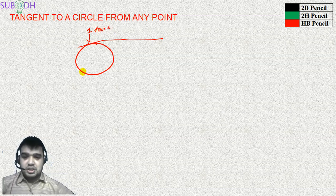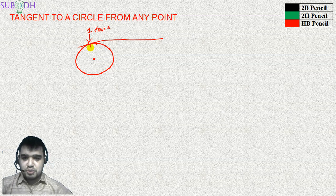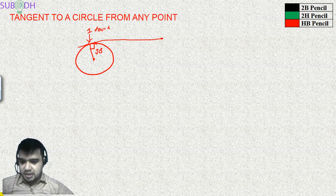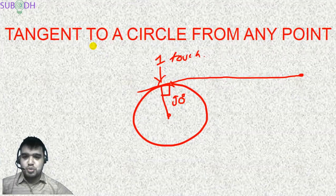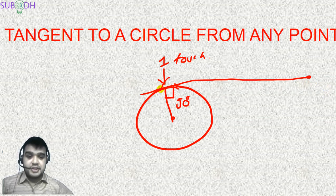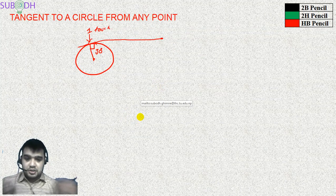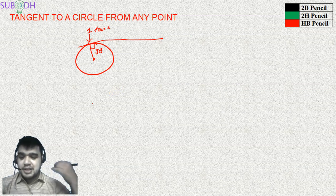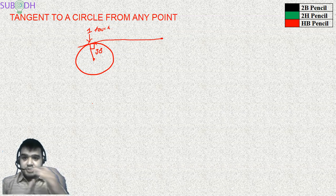That will be our tangent. To establish the basic definition and properties: from the center, the tangent at a point makes an angle of 90 degrees. If we just try to eyeball the contact point and draw a line randomly, we cannot be confident about the contact point. That's not the perfect method to do it — we need a proper geometric method to construct the tangent correctly.